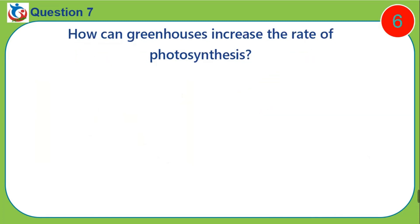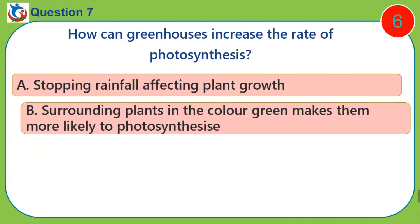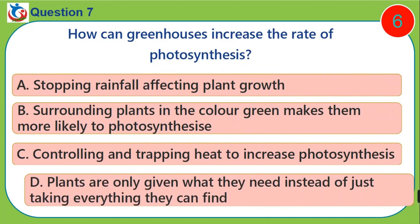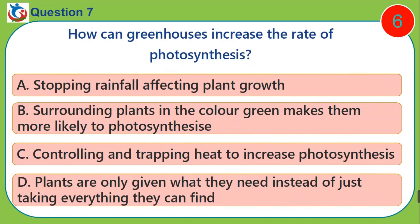Question seven: How can greenhouses increase the rate of photosynthesis? A) stopping rainfall affecting plant growth, B) surrounding plants in the color green makes them more likely to photosynthesize, C) controlling and trapping heat to increase photosynthesis, D) plants are only given what they need instead of just taking everything they can find.